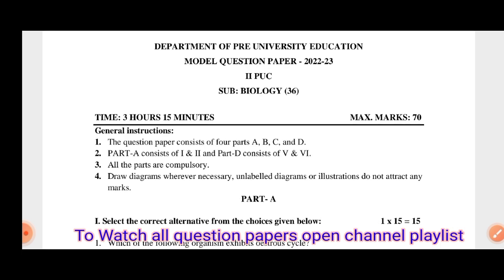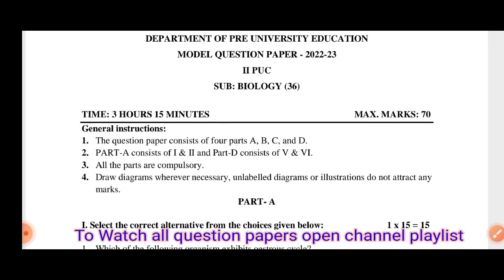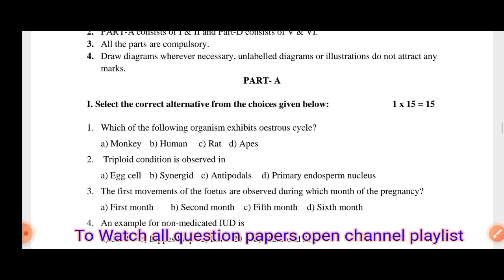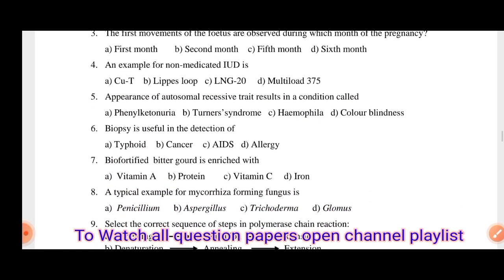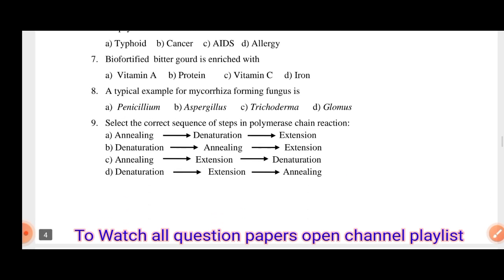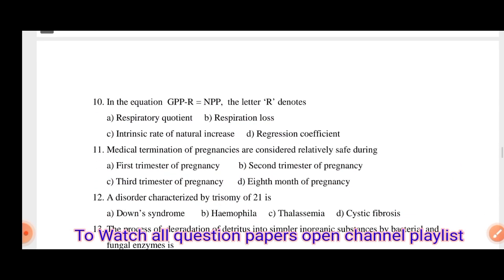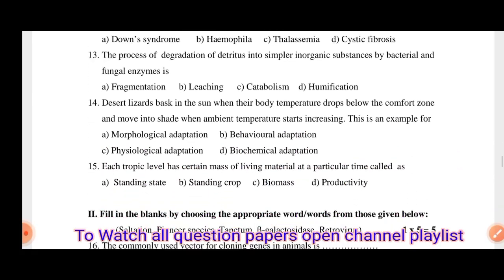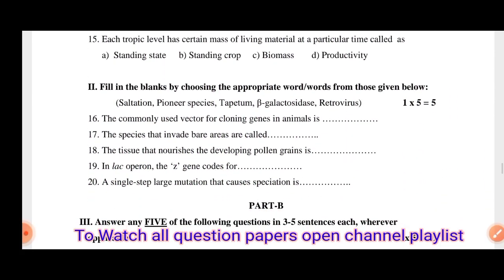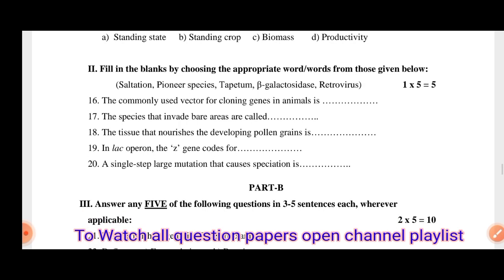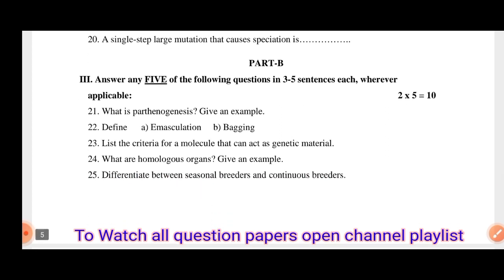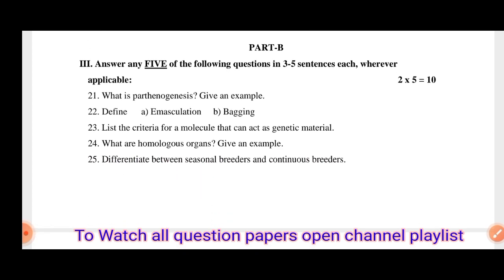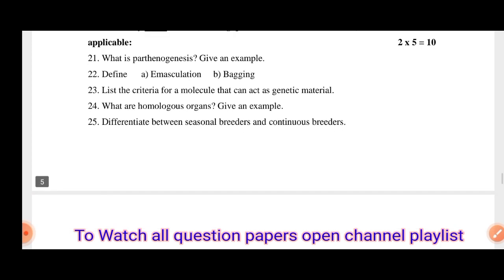This is the model question paper of 2023 Biology. Part A carries 15 questions, each carrying 1 mark — including multiple choice questions and fill in the blanks with 5 appropriate words. Part B has answers to any 5 questions of 3 to 5 sentences each, carrying 2 marks each.